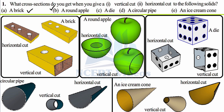Now for a die — you know a die well. It is shown in an isometric view because it is displayed at an angle. When we cut this die horizontally in our imagination, the bottom part left will be a square, because a cube is ultimately made up of squares. When you perform a vertical cut, we again get a square as the cross section. So both the horizontal and vertical cuts of a die give a square.